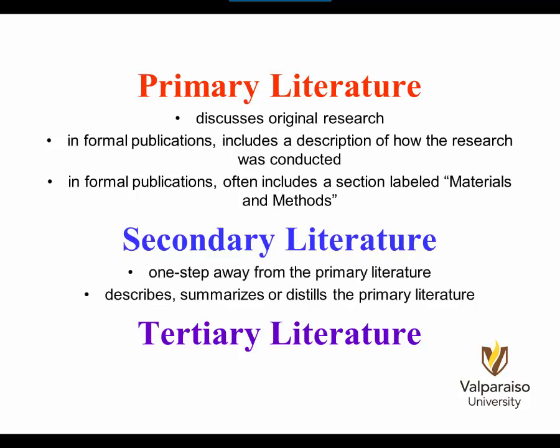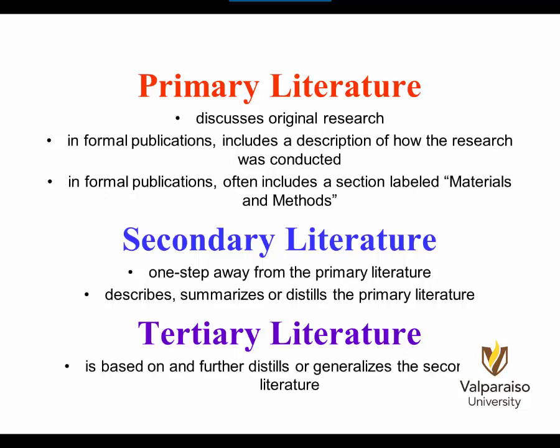Secondary literature is one step away from the primary literature. Secondary literature often describes, summarizes, or distills the primary literature. For example, in the field of law, the primary literature consists of the laws themselves and the documents created that led up to the enactment of the law. The secondary literature would be journal articles and books about the law. Tertiary literature is based on and further distills or generalizes the secondary literature. The science you see in newspapers or on a blog may represent tertiary literature. While a newspaper article may be considered primary in history because of when it was written, it would never be considered a primary source in science or engineering.